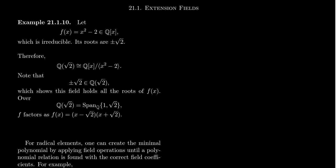Let's look at this first example. Take the polynomial f(x) = x² - 2. We're viewing this as a polynomial over the rational field. This polynomial f is an irreducible polynomial. Since it's a quadratic polynomial, it's reducible if and only if it has a linear factor, which happens if and only if it has a root. By the rational roots theorem, the only possible rational roots would be ±1 and ±2, and a quick calculation shows that none of those four numbers work as roots.